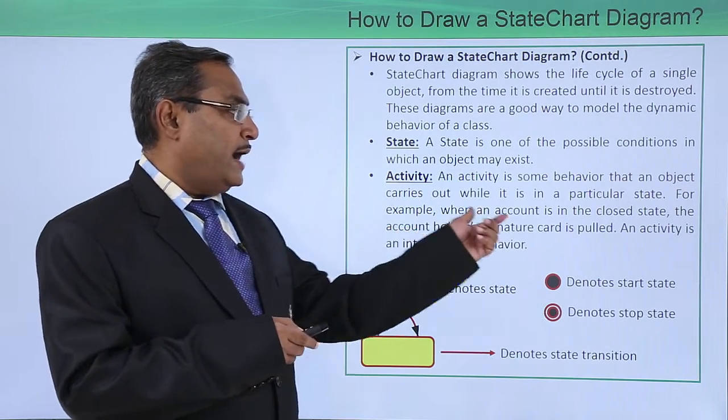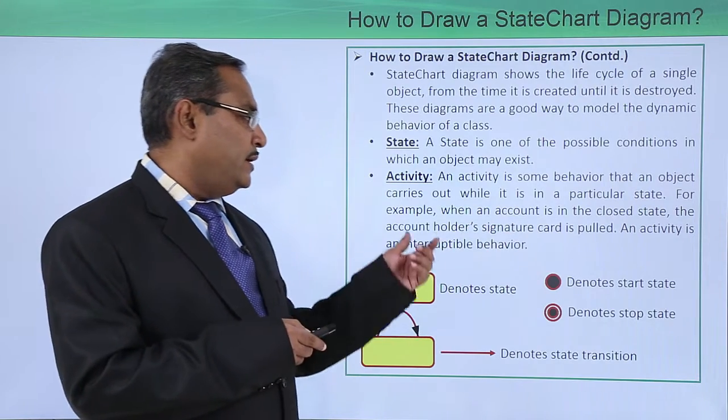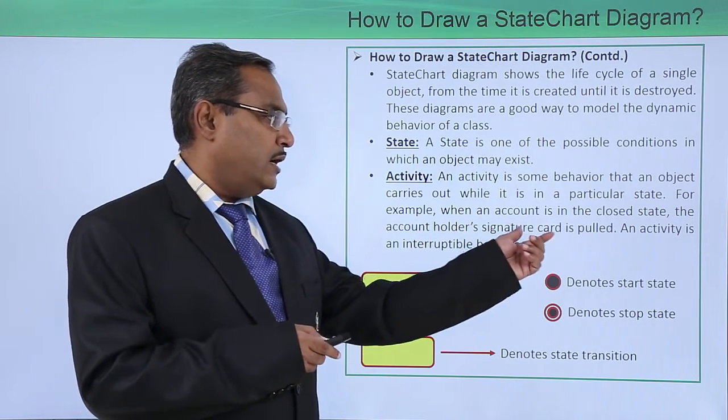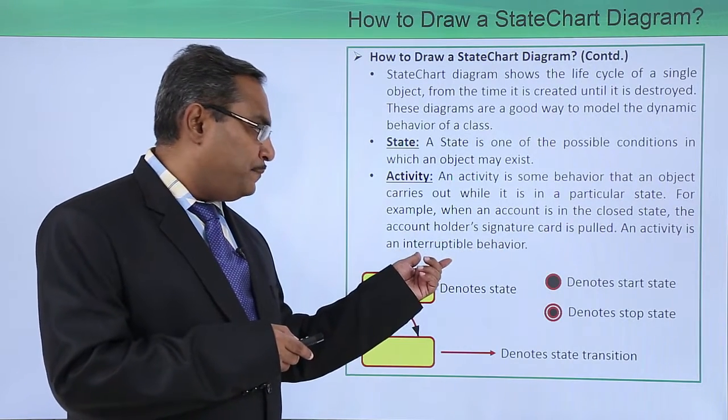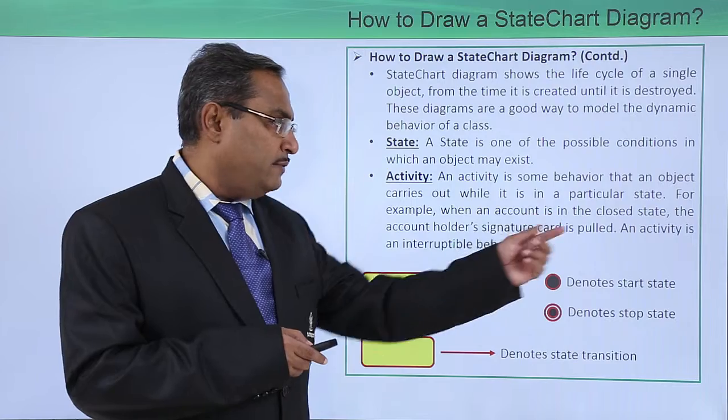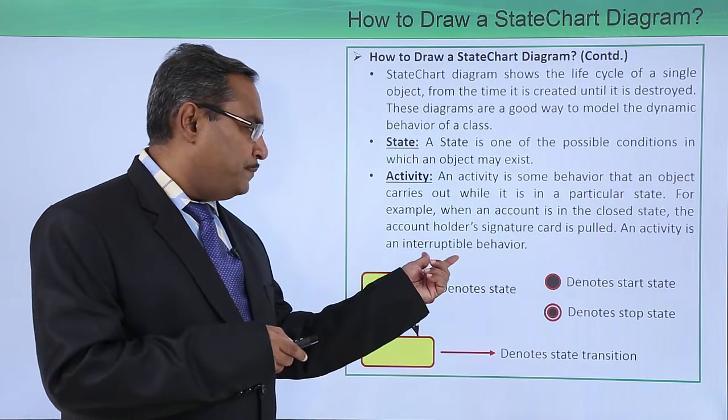For example, when an account is in the closed state, the account holder signature card is pulled. An activity is an interruptible behavior. An activity is an interruptible behavior. That means the respective activity can be interrupted by the respective event generated.